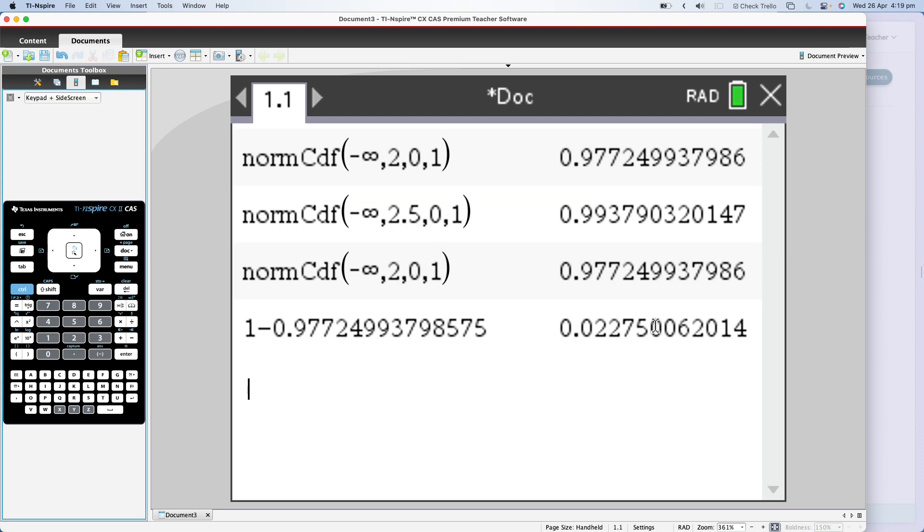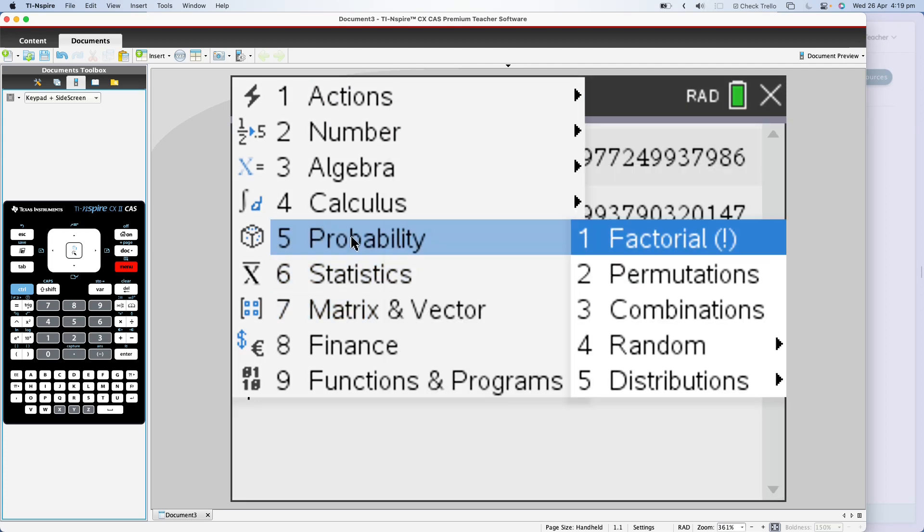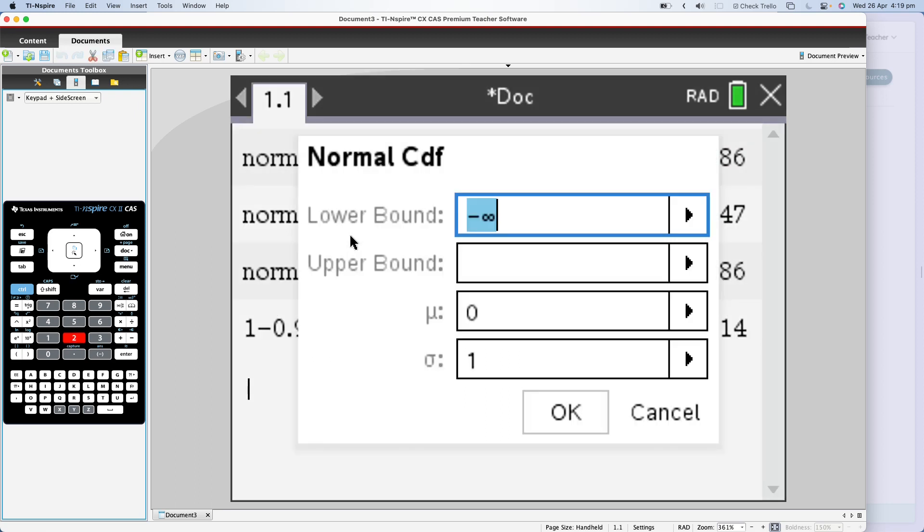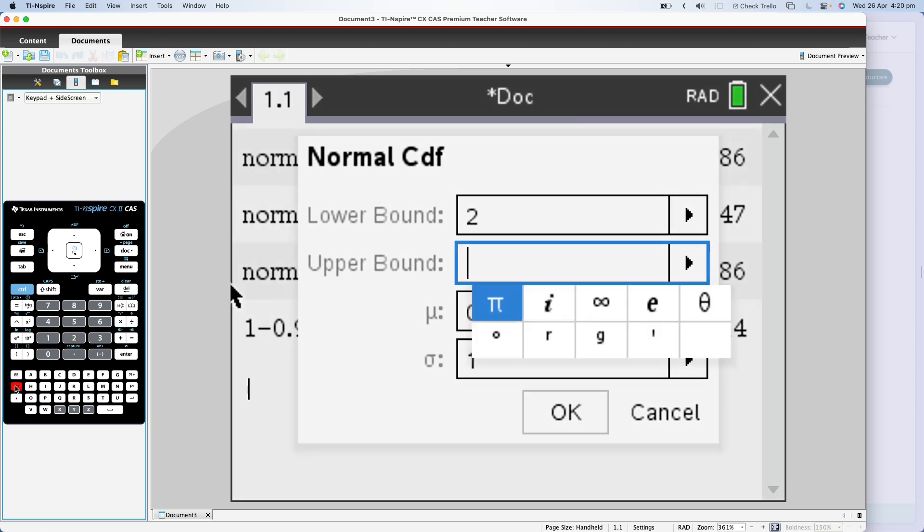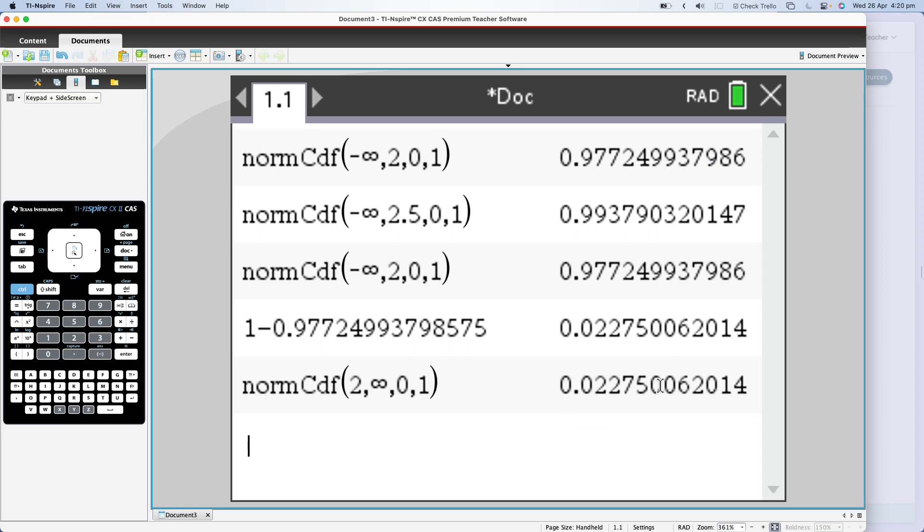Okay, so that's basically how you do it. Now what you could do, it should give you the same answer: go to probability, distributions, normal CDF. I could technically put a lower bound of 2 in and an upper bound of infinity. So that goes in here, select infinity, and 0 and 1, and press OK. As you can see, it's giving me exactly the same answer. So technically you can do it that way. This is a bit more of a sound way of doing it, but you can do it the other way if you prefer. You just need to make sure that you're using minus infinity and infinity in the appropriate places.